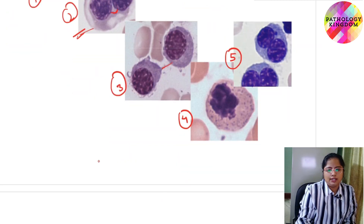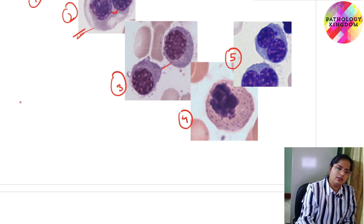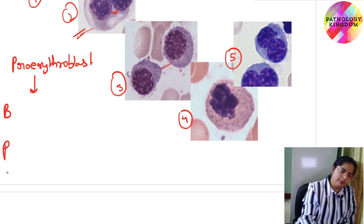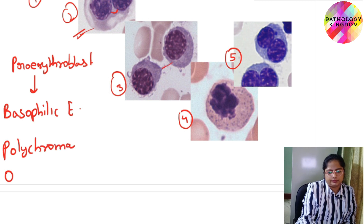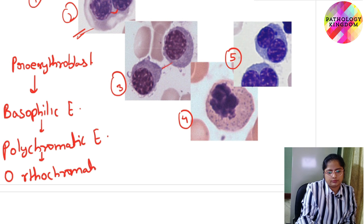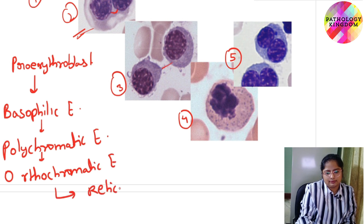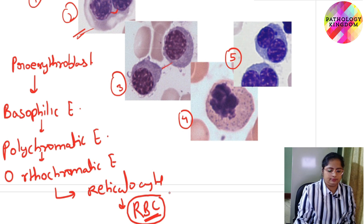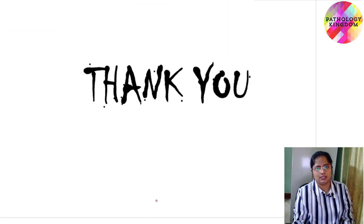Today we have studied erythropoiesis — the formation of red cells. The stages are: proerythroblast, then BPO — basophilic erythroblast, polychromatic erythroblast, orthochromatic erythroblast — then reticulocyte, and finally the mature red blood cell, which is an anucleate structure. Its normal shape is biconcave, central one-third is pallor, and normal lifespan is approximately 120 days. This is all about today's lecture on erythropoiesis.